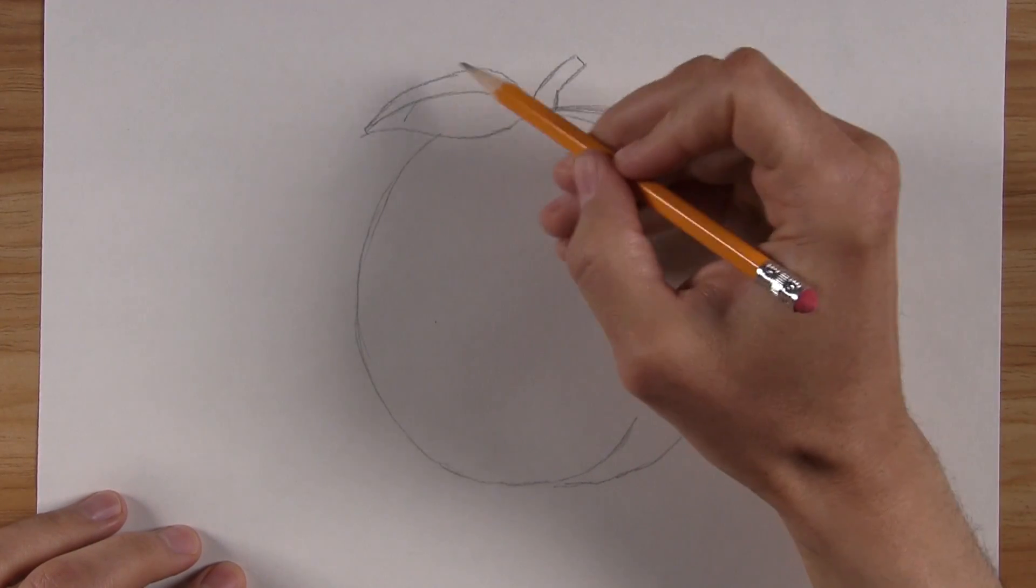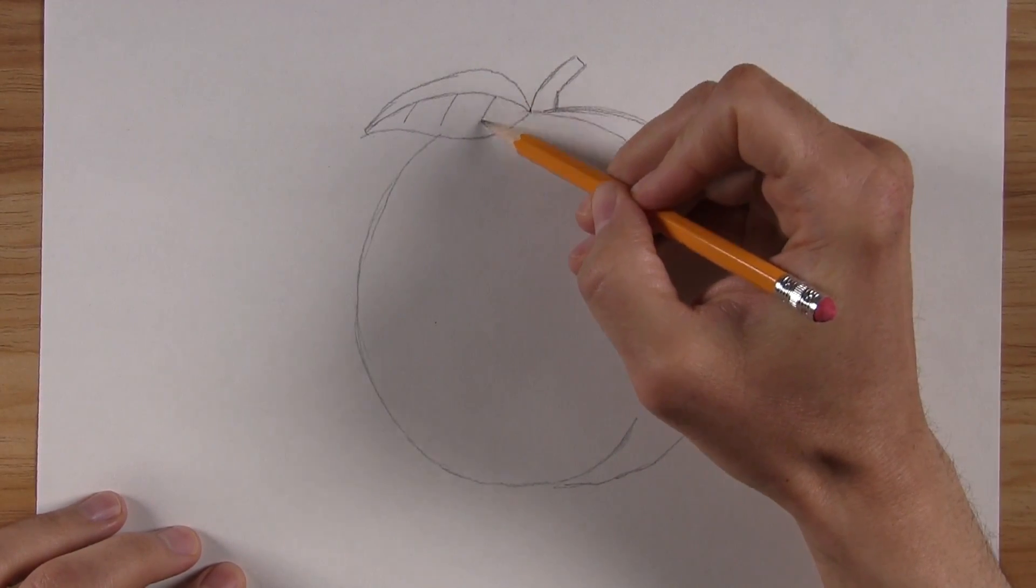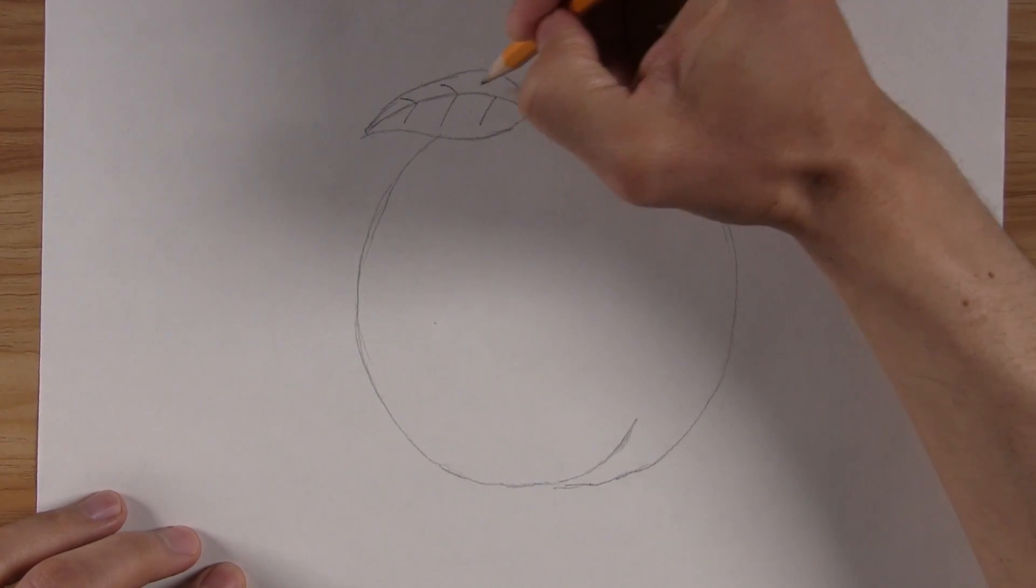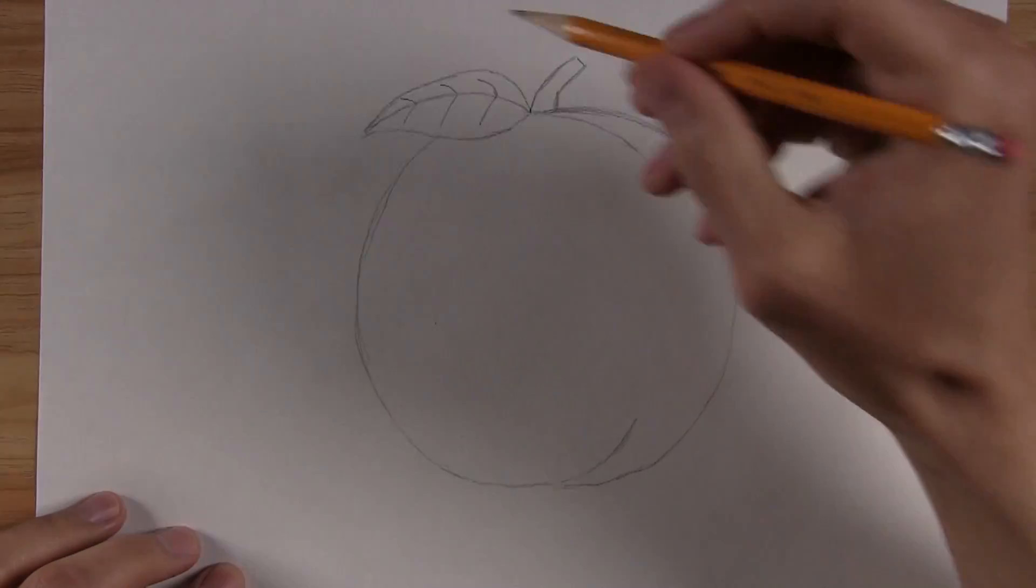Draw some straight lines for more veins on your leaf. Draw a few more on the other side. Make these slightly curved. How's your peach looking so far?